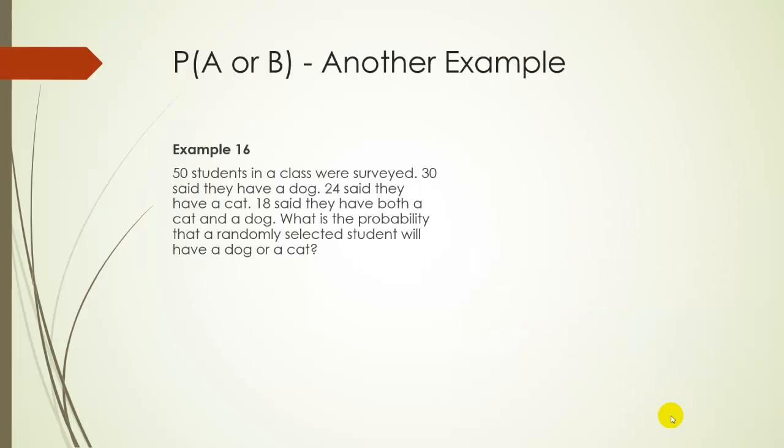So let's just do one more example with this. Suppose we have 50 students in a class. 30 were surveyed and 30 said they had a dog. 24 said they had a cat. And 18 said they had both a cat and a dog. So what's the probability of a randomly selected student having a cat or a dog?